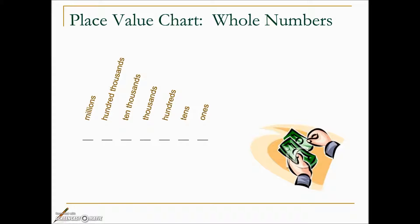The smallest place value is ones, going up by tens. We're working with a decimal system: tens, hundreds, thousands, ten thousands, hundred thousands, and millions.